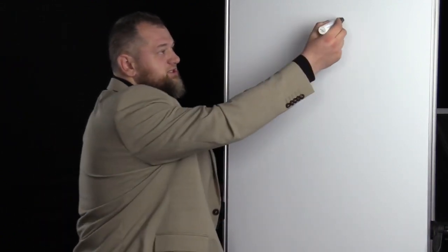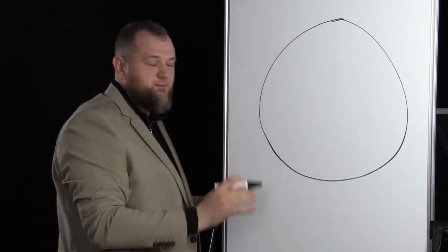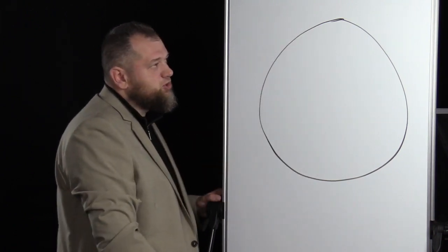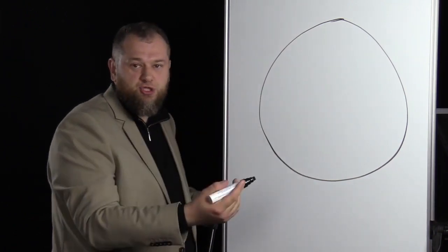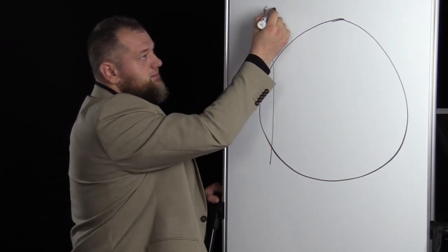If you think about economy as this big circle, so this is economy. And in this economy we have certain institutions. For example, in economy we have banking and finance, banks.